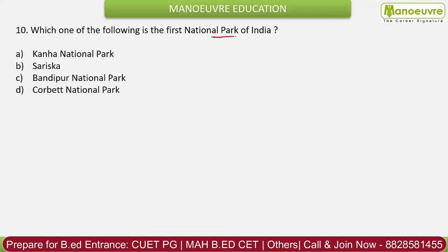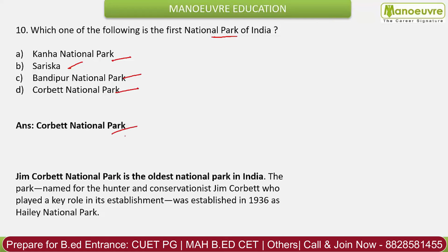Question 10: Which is the first national park of India? Options: Kanha, Sariska, Bandipur, Corbett. The correct answer is Jim Corbett National Park. It is the oldest national park of India, established in 1936 as Hailey National Park, later renamed Corbett National Park. The largest national park is Hemis National Park, located in Ladakh.